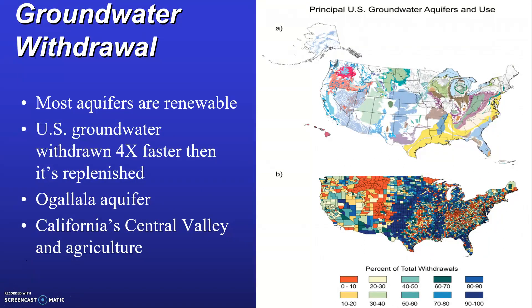Thus far we've focused on surface water — now let's shift to groundwater resources. In the United States, groundwater is being withdrawn on average about four times faster than it can be replenished. Aquifers are found throughout the US but vary widely in their ability to store and recharge water. The colors on this map illustrate aquifer location and geology: blue for unconsolidated sand and gravel, yellow for semi-consolidated sand, green for sandstone, blue-purple for sandstone and carbonate rock, brown for carbonate rock, and red for igneous and metamorphic rock aquifers. This is from the United States Geological Survey.